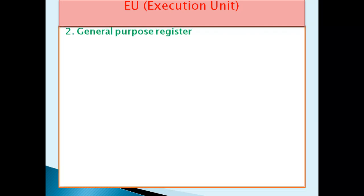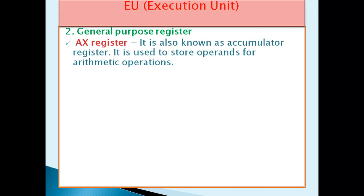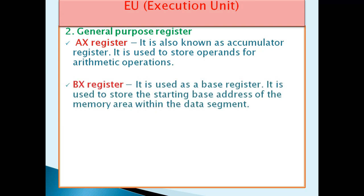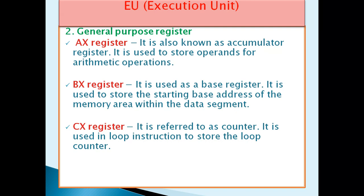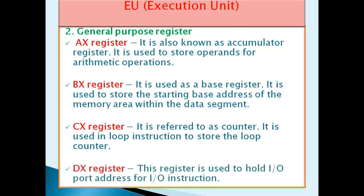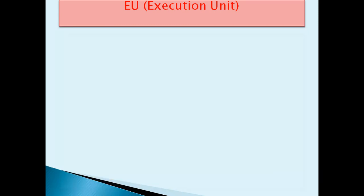The second part of the Execution Unit is the General Purpose Register, which contains four registers. First is the AX register, also known as the Accumulator Register, used to store operands for arithmetic operations. Second is the BX register, used as a Base Register to store the starting base address of the memory area within the data segment. Third is the CX register, referred to as the Counter, used in loop instructions to store the loop counter. Fourth is the DX register, used to hold the I/O port address for I/O instructions.